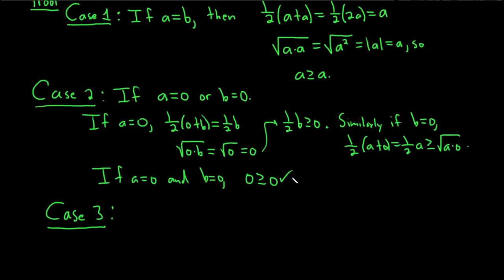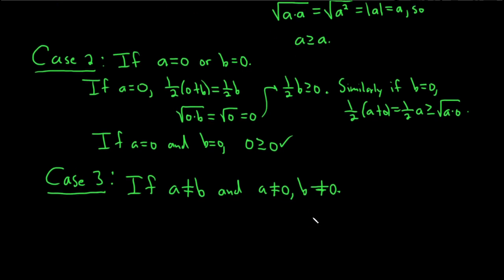The other case that's left is if they're different. The last case is if a is not equal to b, and a is not equal to 0, and b is not equal to 0. In this case, they're both positive, because by assumption, they're greater than or equal to 0. So if they're not 0, they're positive. Let's suppose the result is false. So let's proceed by contradiction.